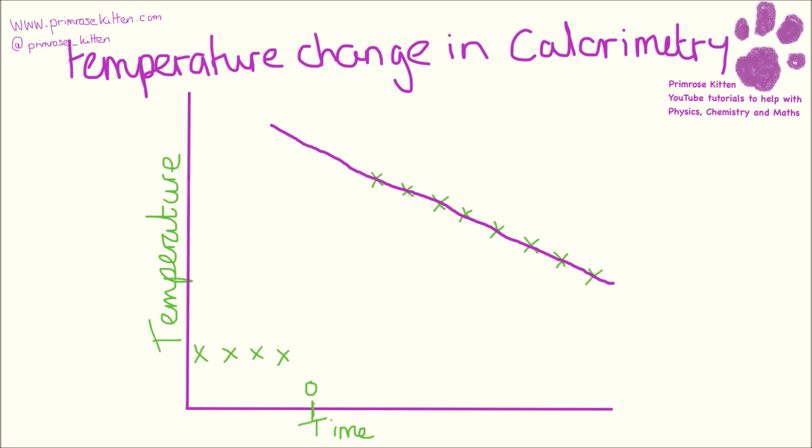And you need to, what we call, extrapolate your line backwards. And then you need to find time zero, go up. And that point there is going to be the highest temperature that was reached.